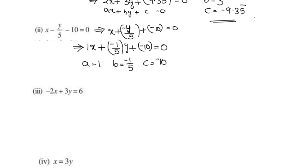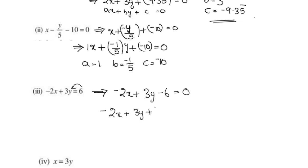Next question: negative 2x plus 3y equals 6. Transposing 6 to the left-hand side, we get negative 2x plus 3y plus negative 6 equals 0. This is in the standard form ax plus by plus c equals 0.